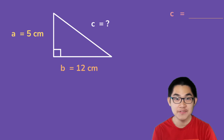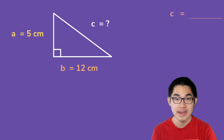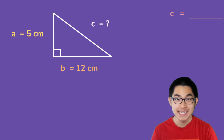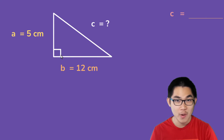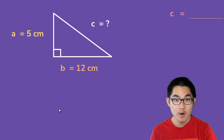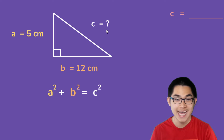Hi guys! In this video, I'm going to show you how to use the Pythagorean theorem. So what exactly is the Pythagorean theorem? Well, it is a statement that says if you have a right triangle, or a triangle with a right angle or 90 degree angle, then you can use the formula a squared plus b squared is equal to c squared to find one of the missing sides.